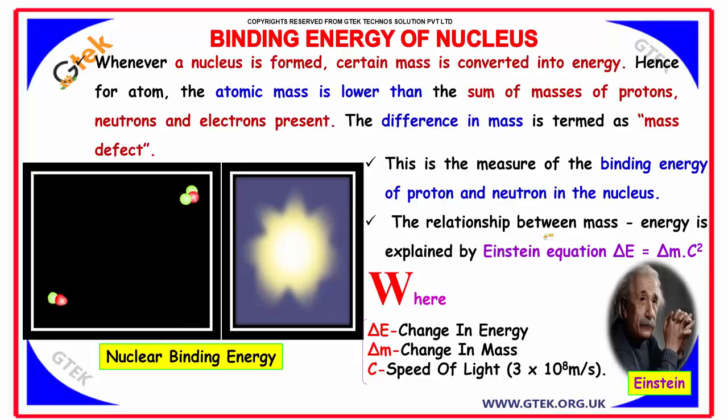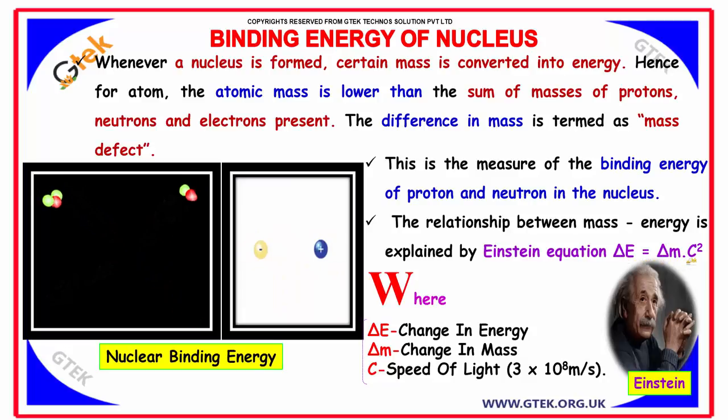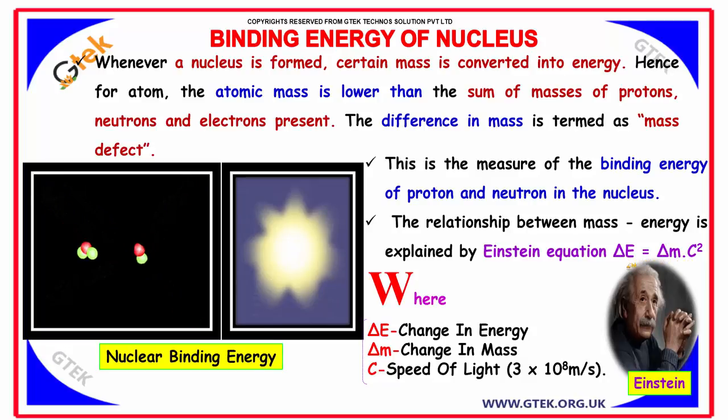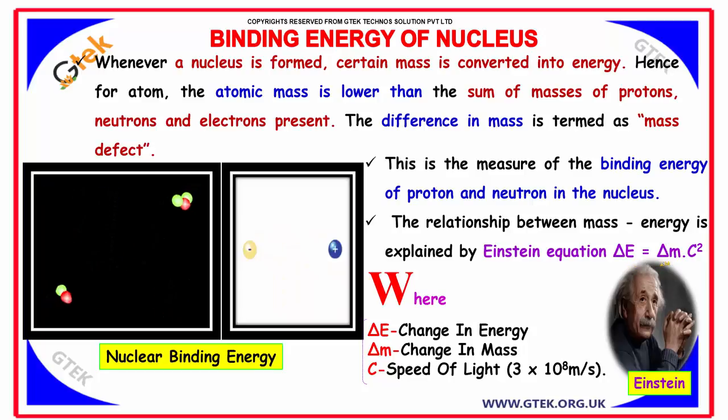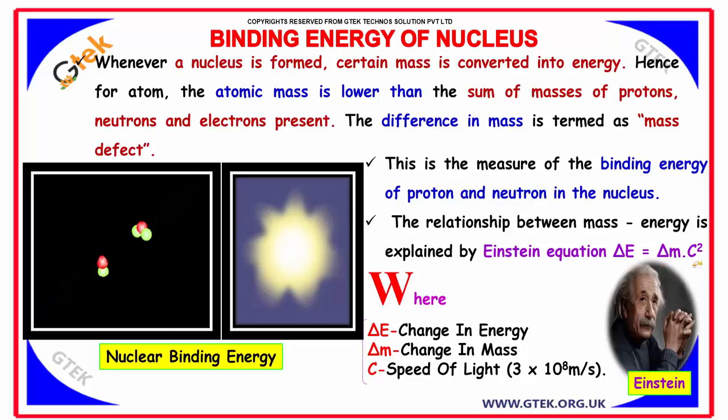The relation between mass and energy is explained by Einstein as delta E is equal to delta M into C square. Delta E is the change in energy and delta M is change in mass and C is the speed of light which is 3 into 10 power 8 meter per second.